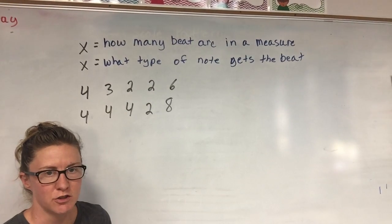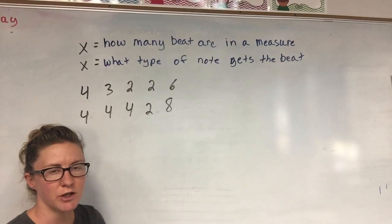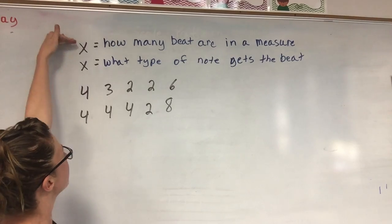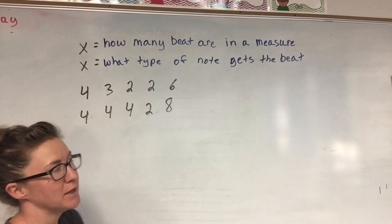So we're going to talk about time signatures. There's two numbers on top of each other for the time signature. The top number tells you how many beats are in the measure.